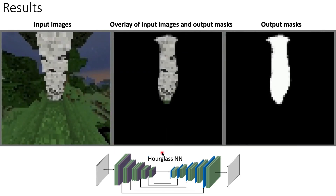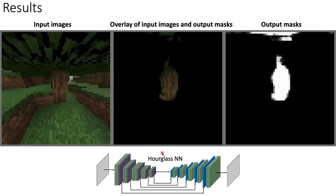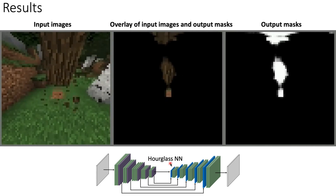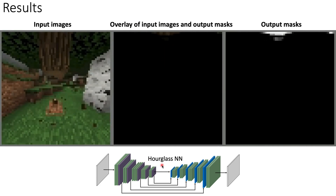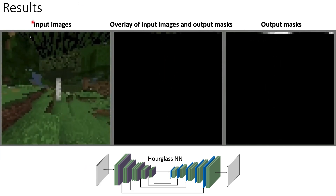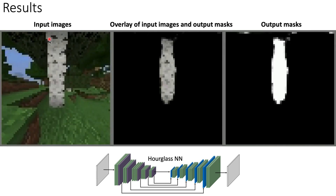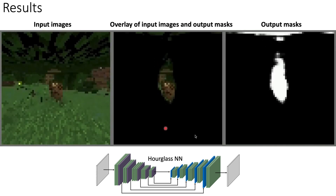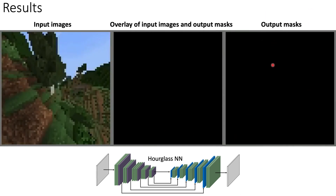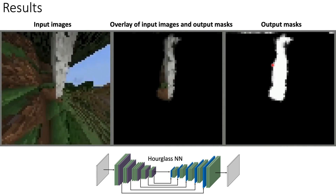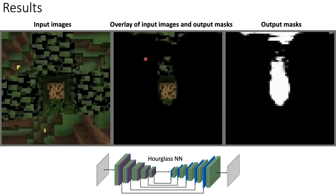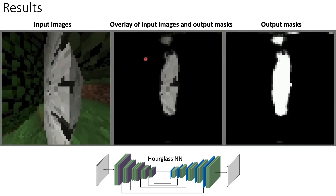This is the result that we can achieve after training an hourglass model using our approach. On the left side you see input images, and on the right side you see output masks. In the middle you see the overlay of input images and output masks.